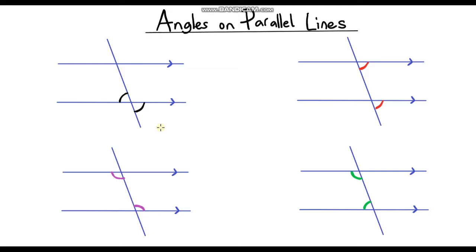So as a bit of a recap, can you remember the names of these four pairs of angles? Pause the video and see if you can have a go at doing that. This first pair of angles are known as opposite angles, and opposite angles are always equal.